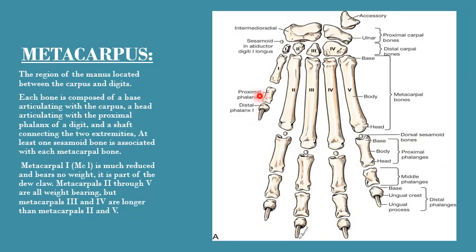The metacarpus is the region of the forelimb between the carpal bones and the digits. It contains five bones named according to their position from medial to lateral: first metacarpal, second metacarpal, third metacarpal, fourth metacarpal, and fifth metacarpal. Each metacarpal bone is associated with at least one sesamoid bone. The first metacarpal is the smallest and is also a non-weight-bearing bone; it is part of the dewclaw of the dog.